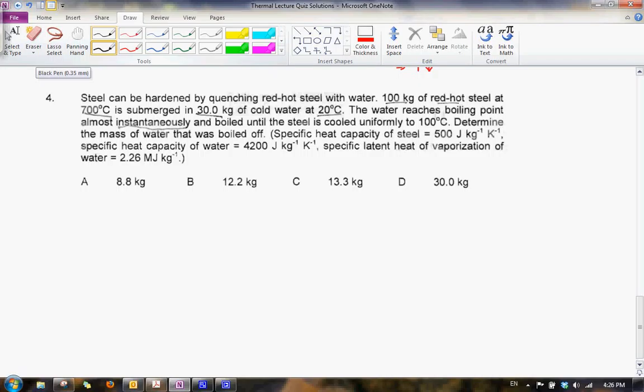Okay, let us now look at question 4. For question 4, let us read the question together. Steel can be hardened by quenching red-hot steel with water. 100 kg of red-hot steel at 700 degrees Celsius is submerged in 30 kg of cold water at 20 degrees Celsius. The water reaches boiling point almost instantaneously and boils until the steel is cooled uniformly to 100 degrees Celsius. You are basically asked to determine the mass of water that was boiled off.